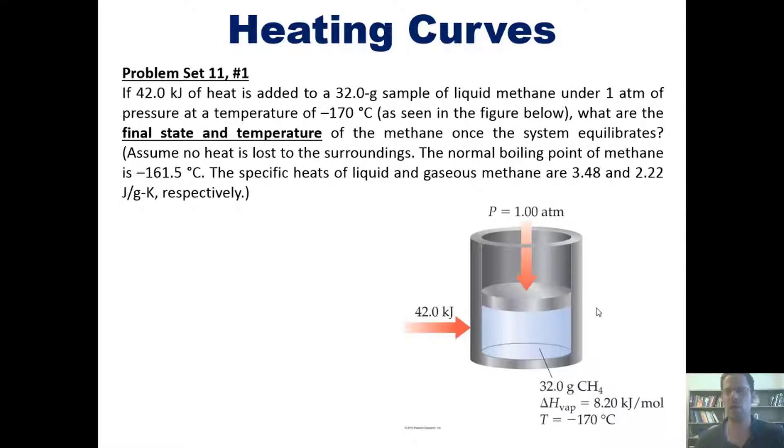And this question I ask, if 42 kJ of heat is added to a 32 gram sample of liquid methane under one atmosphere of pressure at temperature of negative 170, as depicted in this cute little figure, what are the final state and temperature of the methane once the system equilibrates? Parenthetically, it says, assume no heat is lost, the surroundings, the normal boiling point of methane is negative 161.5. The specific heats of liquid and gaseous methane are 3.48 and 2.22 joules per gram kelvin, respectively.